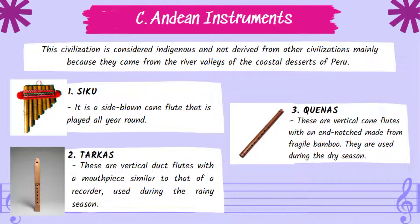Third classification is Andean instruments, from a civilization considered indigenous, originating from the river valleys of the coastal deserts of Peru. Examples include: Siku — a side-blown cane flute played all year round; Tarkas — vertical duct flutes with a mouthpiece similar to a recorder, used during the rainy season; and Quenas — vertical cane flutes with an end notch made from fragile bamboo, used during the dry season.